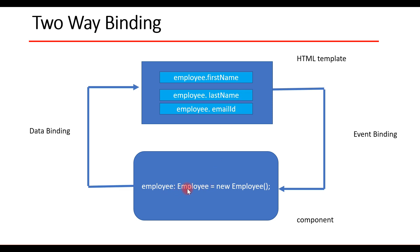So when we create an employee property of the Employee TypeScript class in the component, we access its properties in the HTML template using employee.firstName, employee.lastName, and employee.email. Whenever we enter something in the first name, last name, or email ID input controls, the corresponding properties get automatically updated in the component class. And whenever we make changes to model properties in the component class, the corresponding properties get updated in the HTML template.